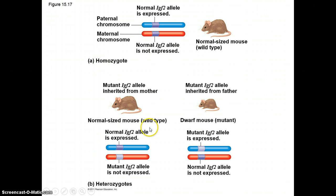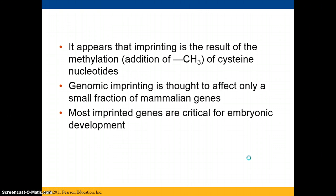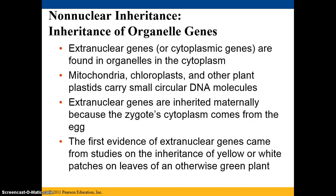In heterozygotes, if a normal IGF-2 allele is expressed and a mutant IGF-2 allele is not expressed, you get a normal-type mouse when the gene is inherited from the mother. However, if the gene is inherited from the father, the mutant IGF-2 allele is expressed and the normal allele is not, resulting in a dwarf-sized mouse. This imprinting appears to result from methylation — the addition of a methyl group (CH3) to cytosine nucleotides. Genomic imprinting affects only a small fraction of mammalian genes, but most imprinted genes are critical for embryonic development.